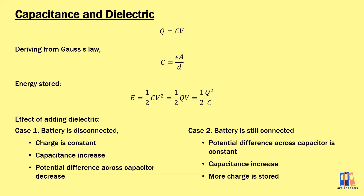Another formula that we learn is about the energy stored in a capacitor which is half CV squared, or half QV, or half Q squared over C. You learn how to derive those three formulas.